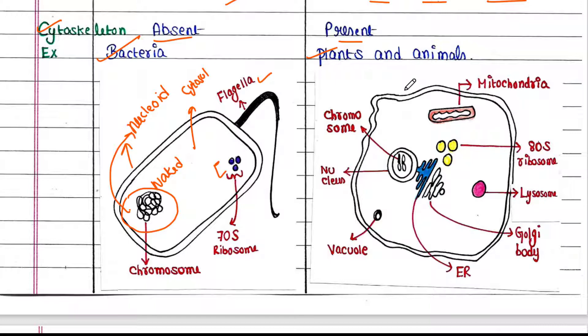This is the typical animal cell structure. It has the cytosol, mitochondria, 80S ribosomes, lysosomes, Golgi body, endoplasmic reticulum, vacuole, and nucleus. The chromosome is found inside the nucleus. One thing is common in both cells: the plasma membrane.